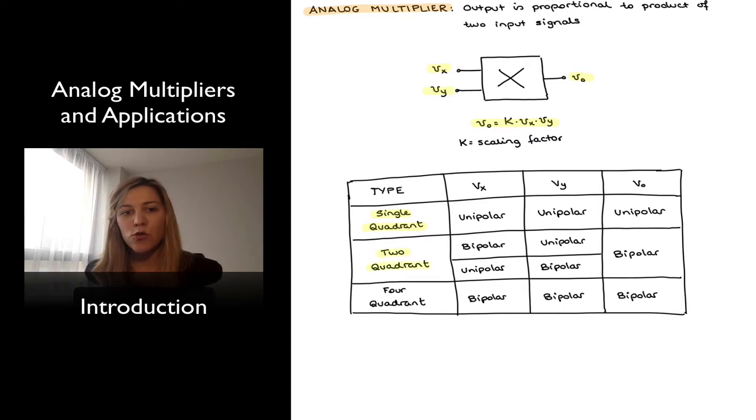Two quadrant multipliers are those where one of the input signals has to be unipolar but the other one can be bipolar, and the output therefore is bipolar. Four quadrant multipliers are those in which both signals can be bipolar signals, and the output is also a bipolar signal. Those will be the most flexible types of analog multipliers.